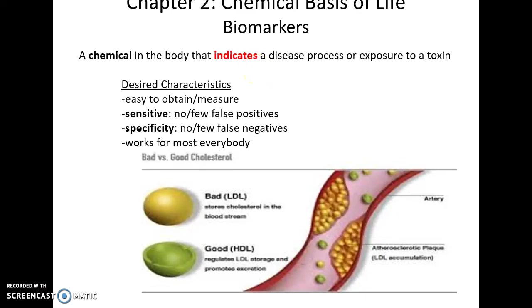Biomarkers are chemicals in the body that we can assess to determine if there may be a disease in process or if someone has been exposed to a toxin. The best biomarkers are easy to obtain and measure, very sensitive (few or no false positives), and have specificity (few or no false negatives). They also need to work for most everybody. A common example is cholesterol, broken down into HDLs (good cholesterol) and LDLs (bad cholesterol). Too much LDL could be a sign of some sort of health issue.